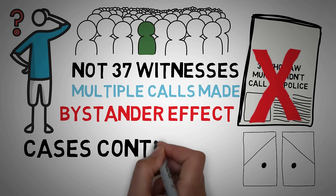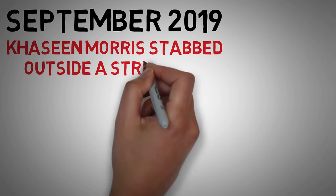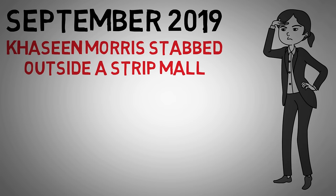Cases of the bystander effect continue to make headlines all over the world. For example, in September 2019, a 16-year-old named Cassine Morris was stabbed to death while in a fight outside of a strip mall. Dozens of people witnessed the teen's death. Many even filmed the fight and broadcast it over Snapchat, but no one intervened.